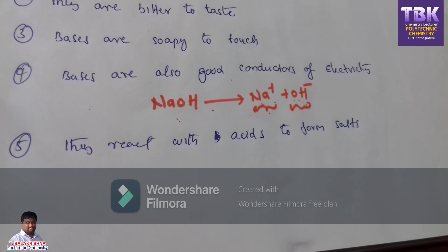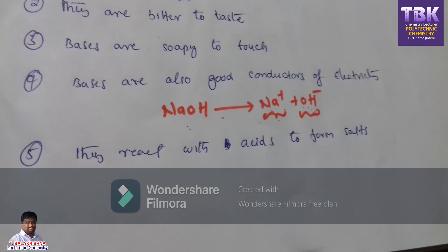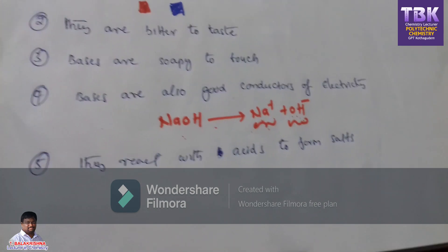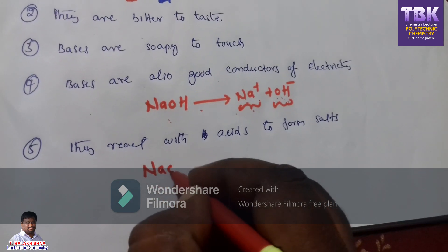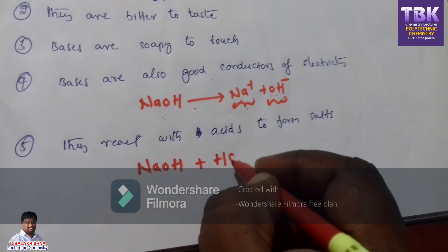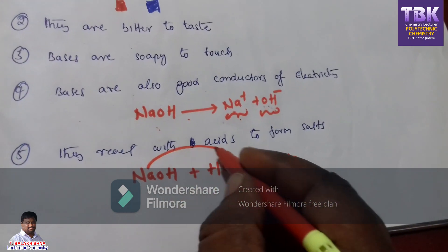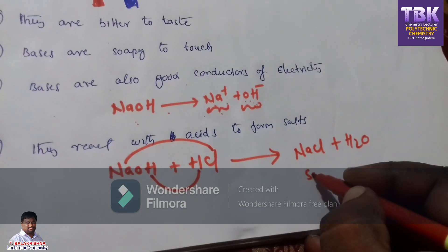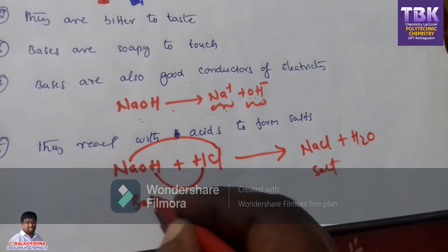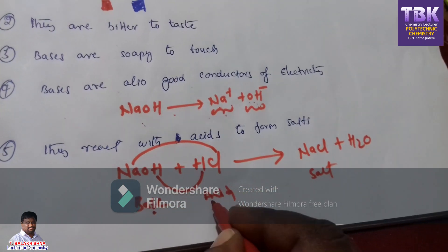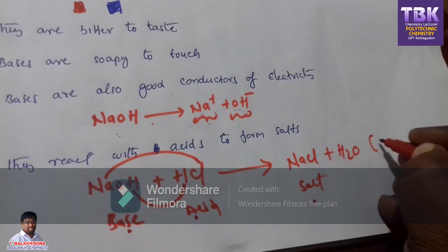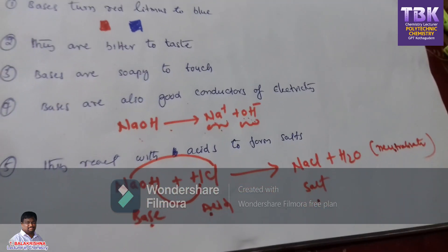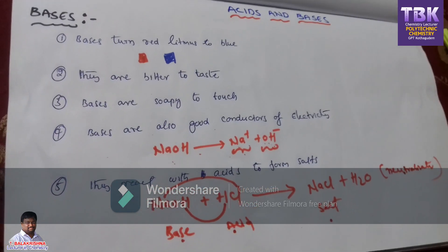Fifth point: bases react with acids to form salts and water. Such a reaction is called a neutralization reaction. For example, base sodium hydroxide reacts with acid HCl to produce NaCl plus H₂O. NaCl is a salt. This type of reaction is called a neutralization reaction.